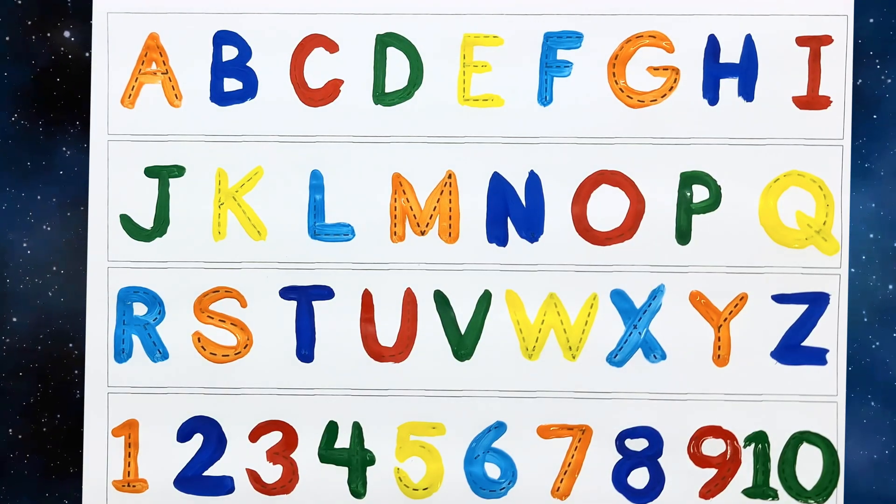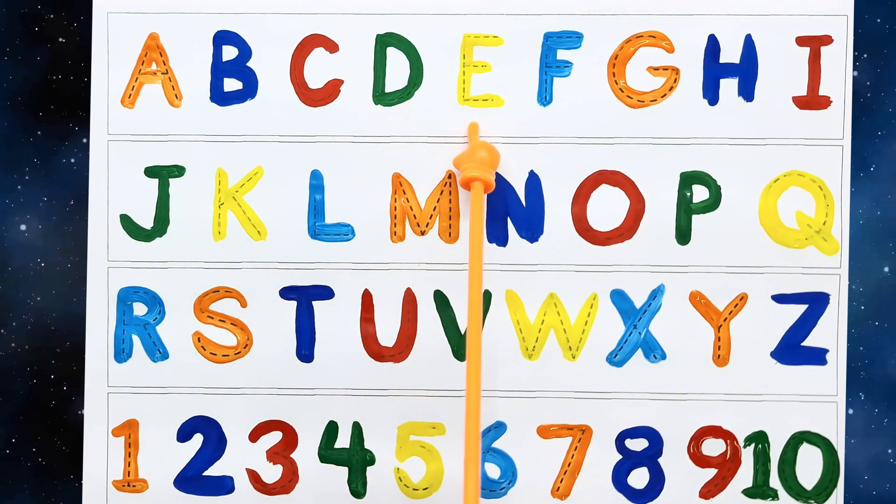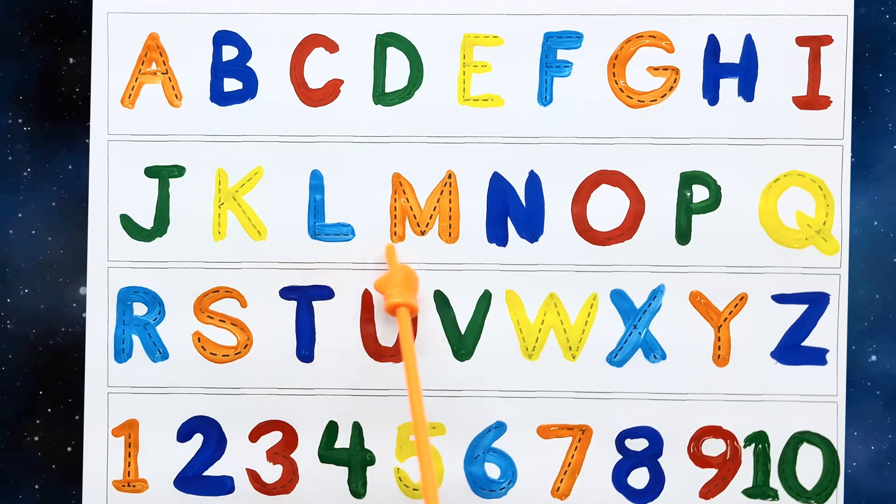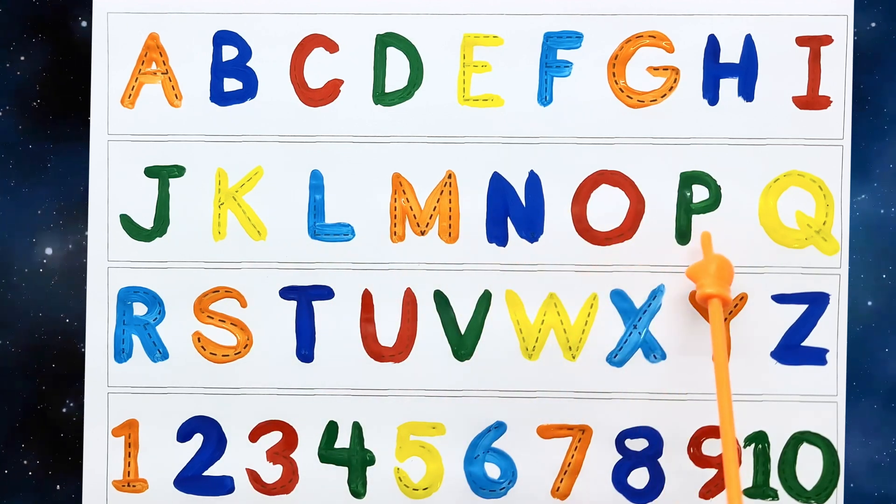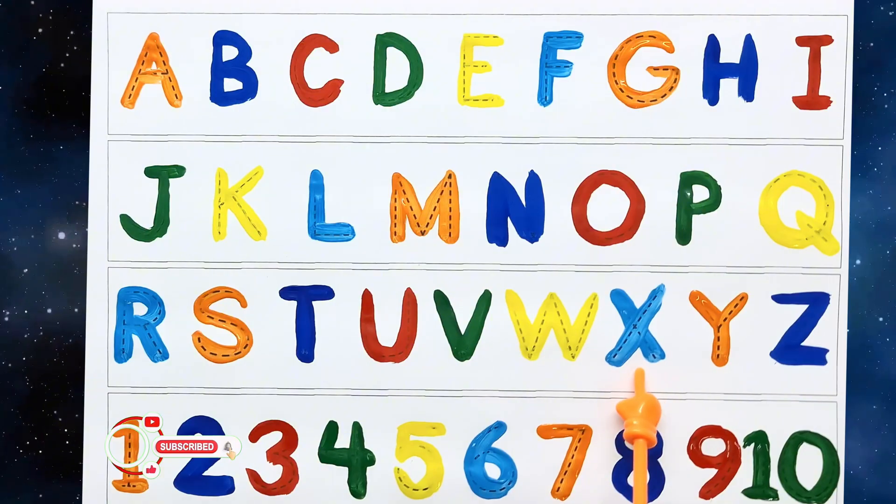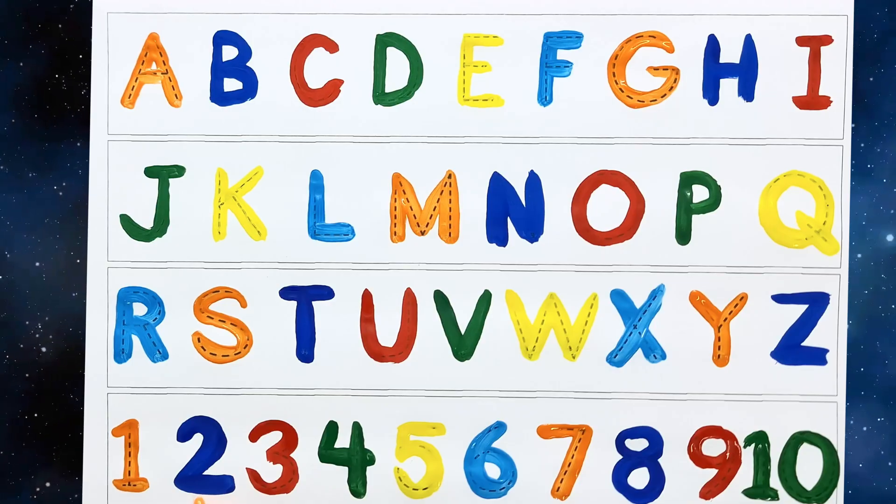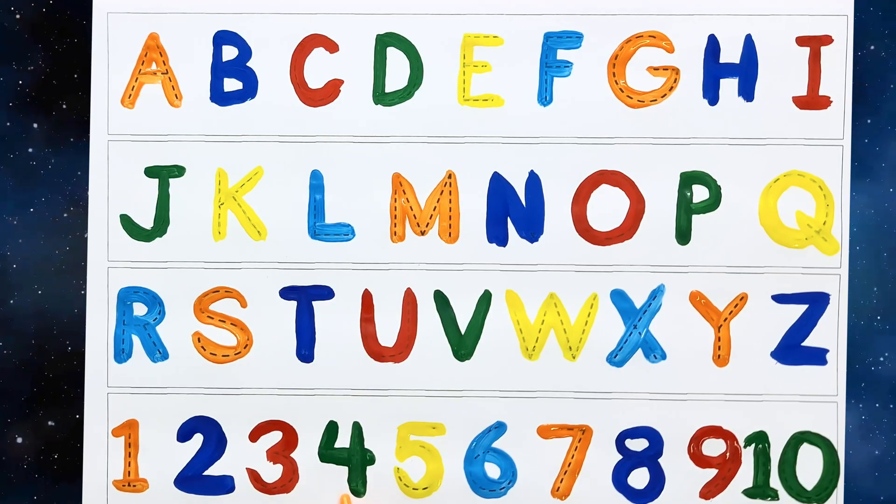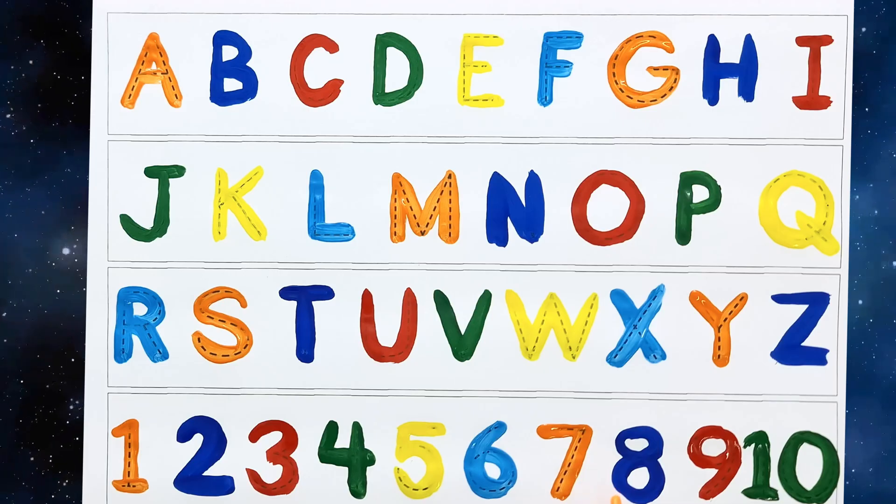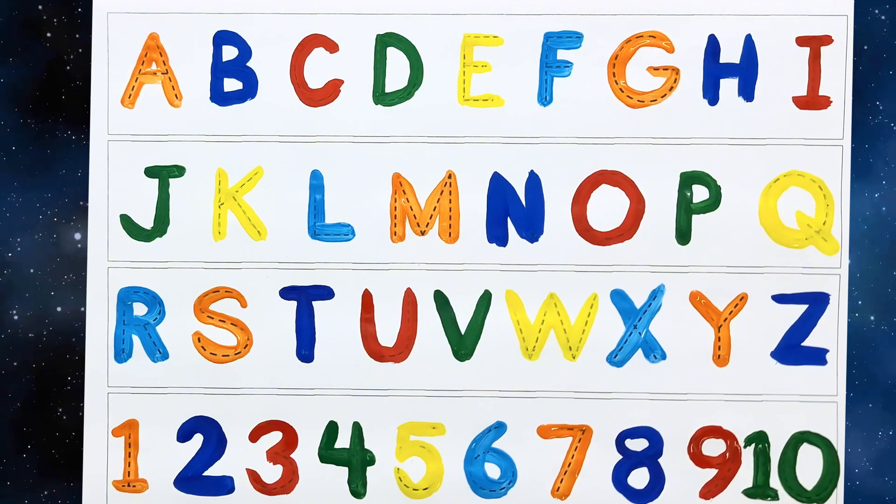Let's repeat the alphabet and numbers. A, B, C, D, E, F, G, H, I, J, K, L, M, N, O, P, Q, R, S, T, U, V, W, X, Y, Z. One, two, three, four, five, six, seven, eight, nine, ten.